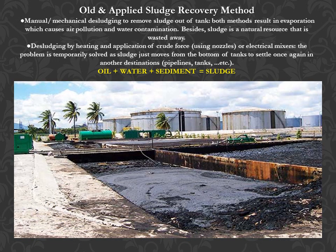Old and applied sludge recovery methods: Manual and mechanical desludging to remove sludge out of tanks — both methods result in evaporation which causes air pollution and water contamination. Besides, sludge is a natural resource that is wasted away. De-sludging by heating and application of crude force or electrical mixers only temporarily solves the problem, as sludge just moves from the bottom of the tanks to settle once again in another destination.